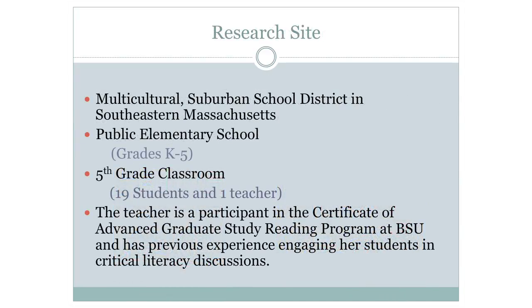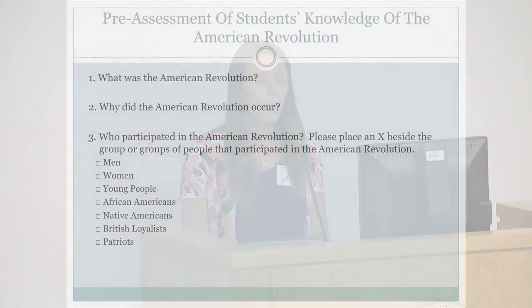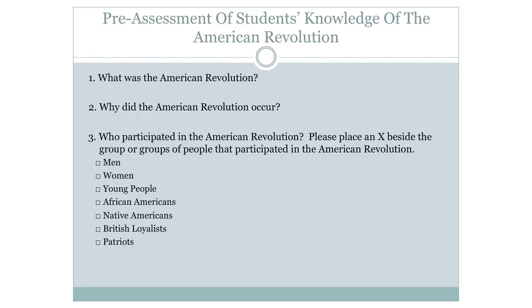The research site was a multicultural suburban elementary school in southeastern Massachusetts. We were in a fifth grade classroom with 19 students and one teacher. We gave the students a pre-assessment before starting the unit on the American Revolution to assess their prior knowledge. The pre-assessment consisted of three questions: What was the American Revolution? Why did the American Revolution occur? And who participated in the American Revolution? The students placed an X beside the group or groups of people they believed participated.